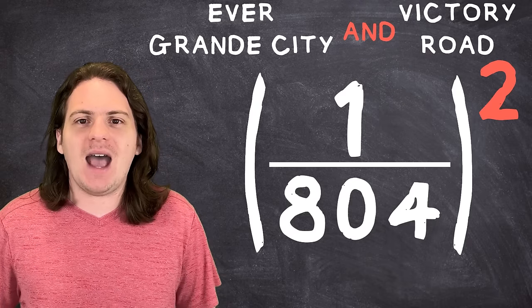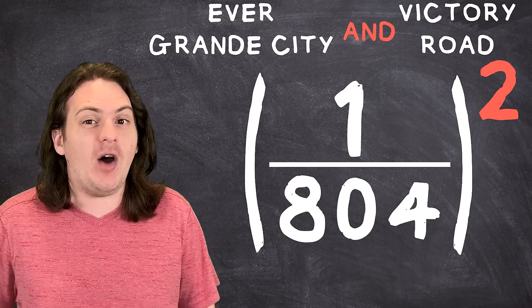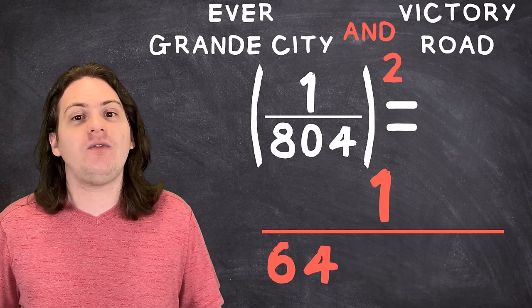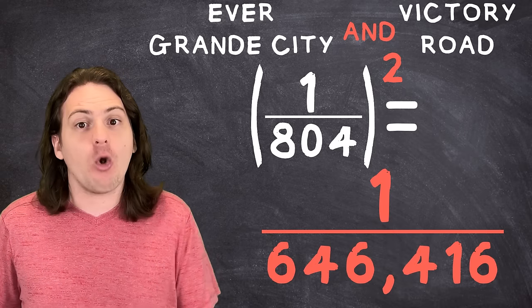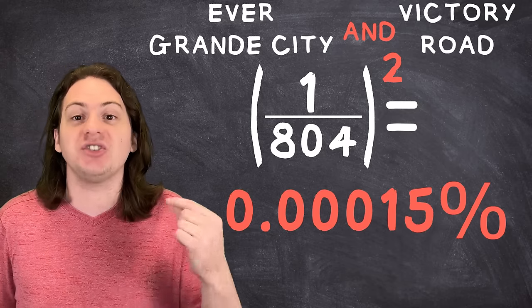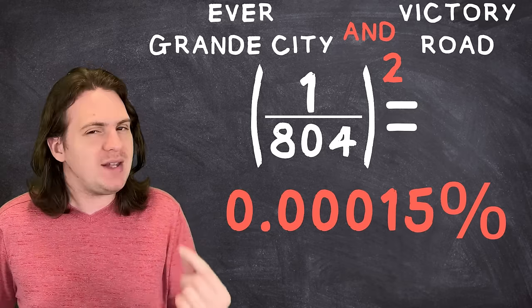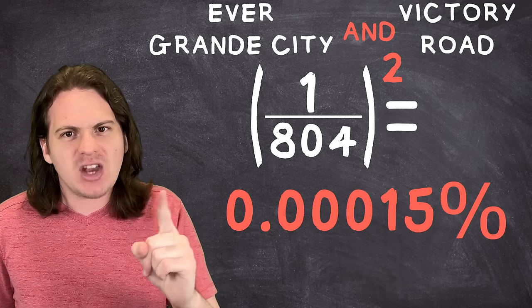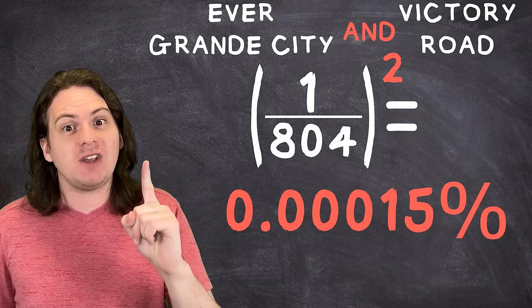Running the math, that means that the odds of finding two Rattata on the last two routes of the game is 1 in 646,416, or 0.00015%. Those are some pretty bad odds. But, believe it or not, it's actually even worse than that.